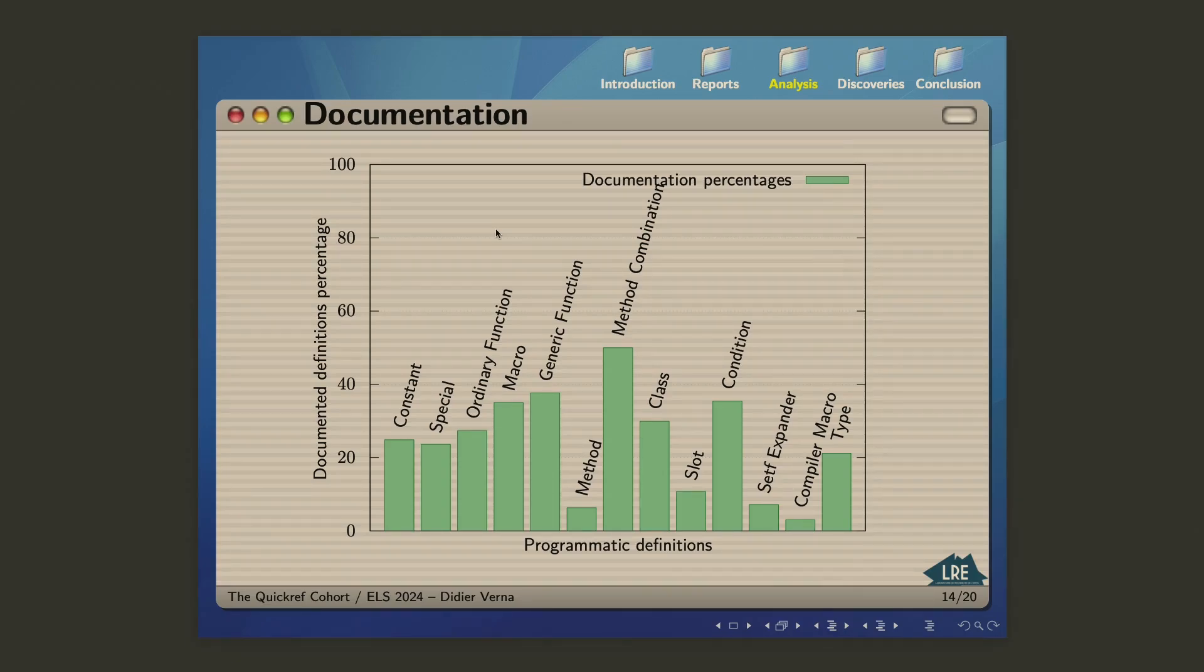Some interesting things here. People seem to disregard documenting the methods, as opposed to the generic functions. There is not much documentation in slots, much less than in classes, and practically no one is interested in documenting their compiler macro. I don't know why. Personally, I'm such a psycho. I document everything.